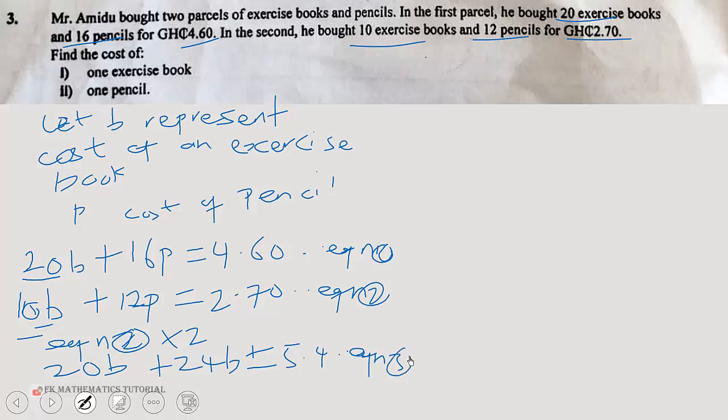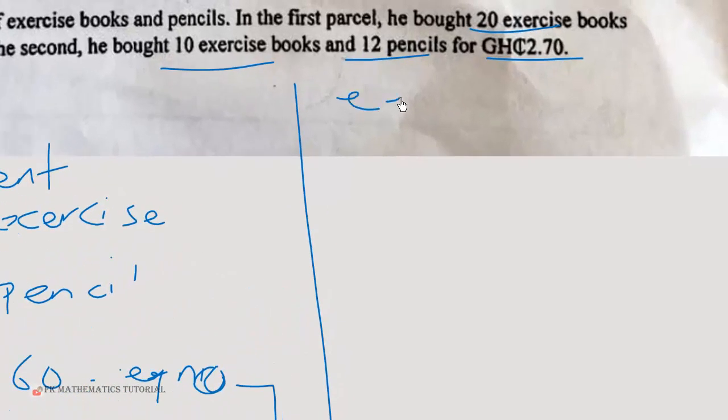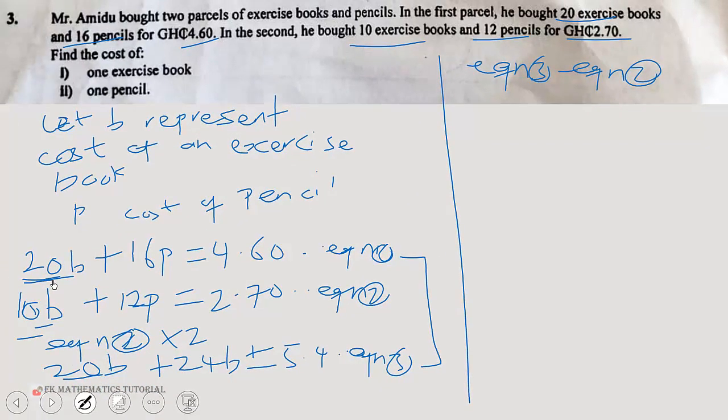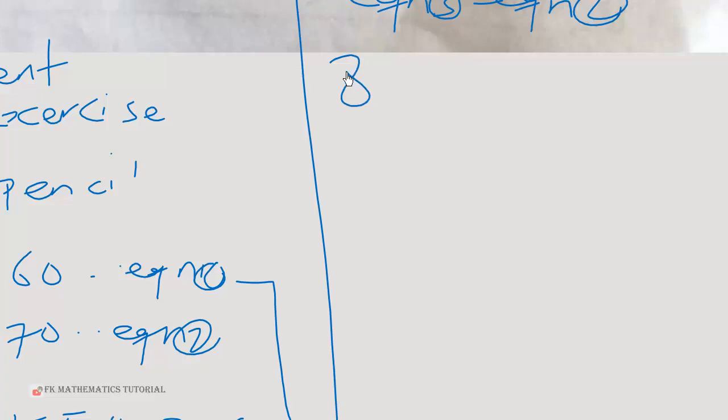Now we are going to handle equation one and equation three. So equation three minus equation one. We are going to get 20 minus 20 is 0. Then 24 minus 16 will be 8. So we get 8P is equal to 5.4 minus 4.6, that will give us 0.8.